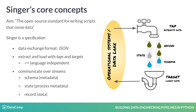Taps and targets communicate using three kinds of messages — schema, state, and record — which are sent to and read from specific streams. A stream is a named virtual location to which you send messages that can be picked up at a downstream location. We can use different streams to partition data based on the topic, for example. Error messages would go to an error stream, and data from different database tables could go to different streams as well.